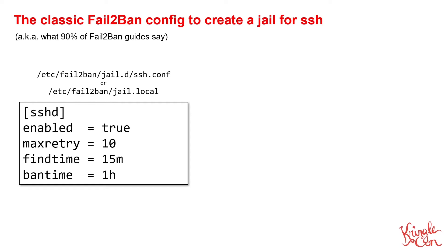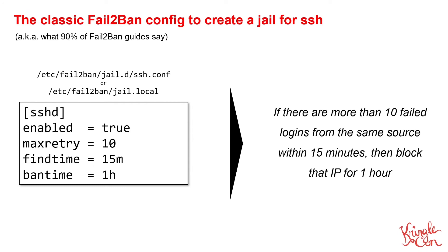The other parameters relate to how much activity constitutes a ban and for how long a ban should last. In this case, if there are more than 10 failed logins from the same source IP address within a 15-minute period, then that IP address should be blocked for a period of one hour. The precise values you pick for these parameters will depend on your particular use case and the level of risk that you want to take on.